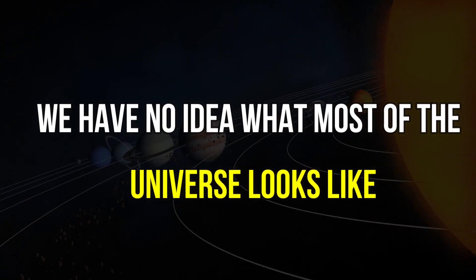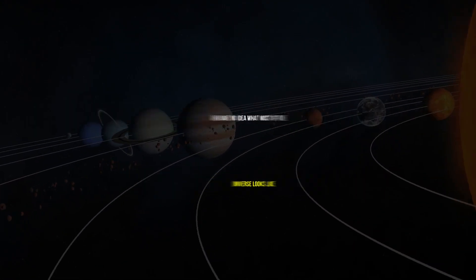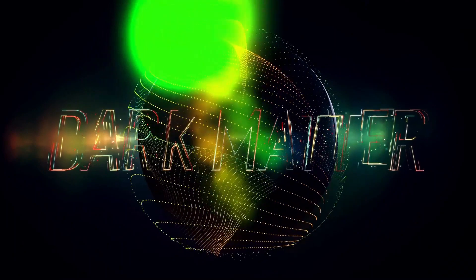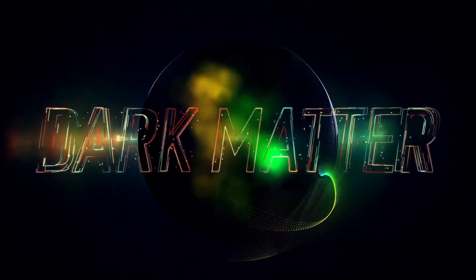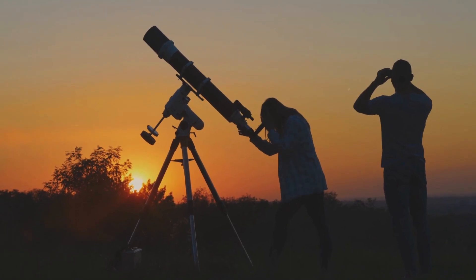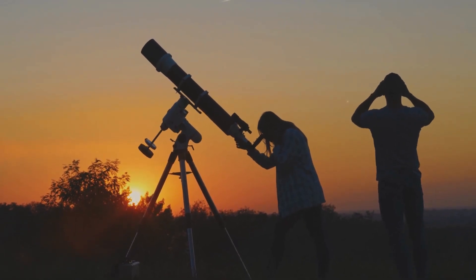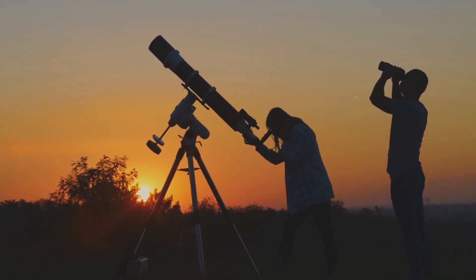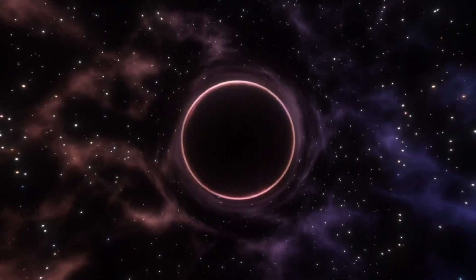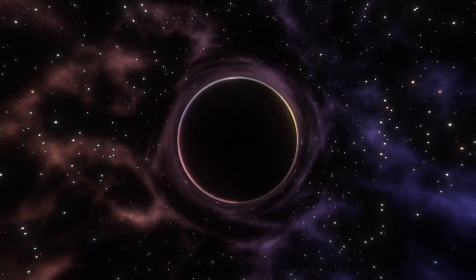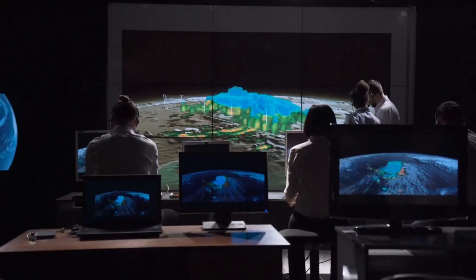Amazing fact number 6, we have absolutely no idea what most of the universe looks like. Dark matter is a type of matter that does not interact with light or any other form of electromagnetic radiation, which makes it invisible to telescopes and other instruments that detect electromagnetic waves. Despite being invisible,